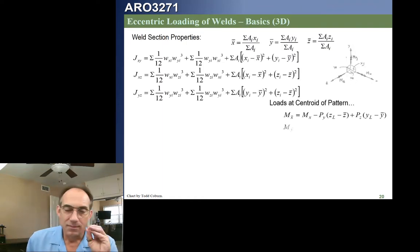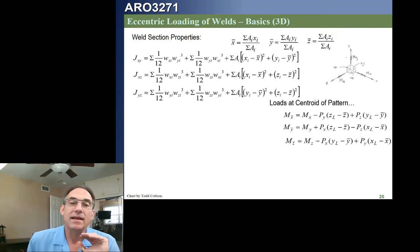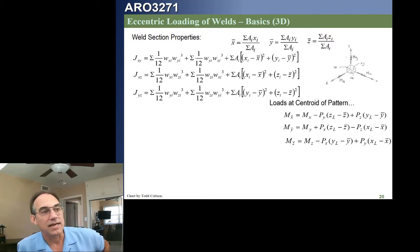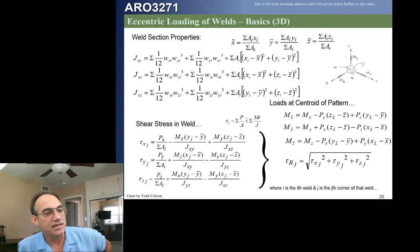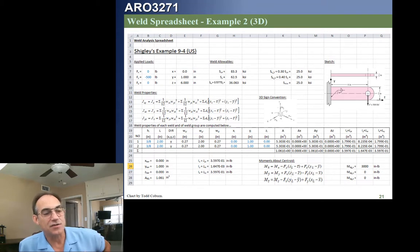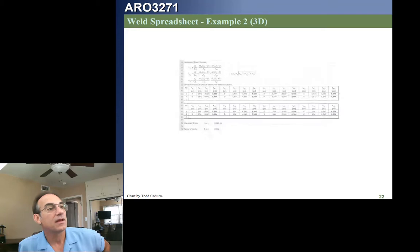For three-dimensional welds — which you won't be required to use in this class — we follow the same approach but with three planes. We have torsion and bending in the XY, XZ, and YZ planes, giving three J's, three potential moments, and three centroid coordinates x̄, ȳ, z̄. We construct the table, calculate three J values, move loads to the centroid, and apply the stress equations using the right-hand rule sign convention, with the resultant as the root mean square.